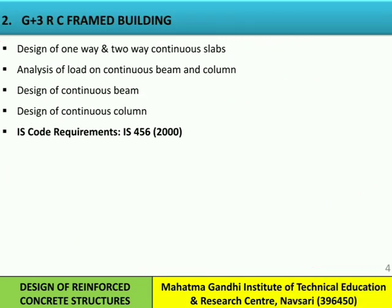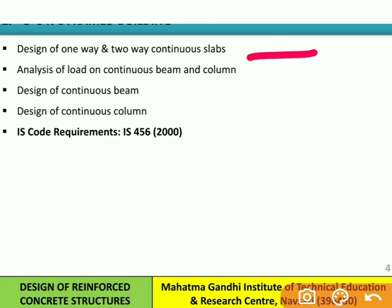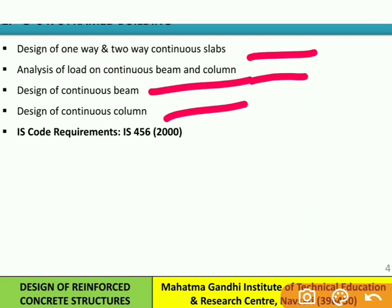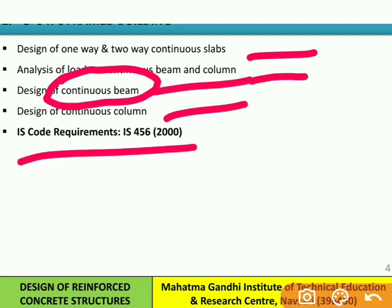Moving to the second chapter, G+3 RC frame building. Here we need to study the design of one-way and two-way continuous slabs. In the previous semester's Elementary Structural Design, we studied simply supported and one-way continuous slabs; now we extend to two-way continuous slabs. We will analyze loads on continuous beams and columns, then design them. Previously we studied singly RC, doubly RC, and T-beams; here we design continuous beams, using code IS 456:2000. One sum in the range of 11 to 14 marks will be there in the exam.